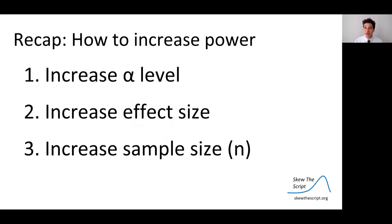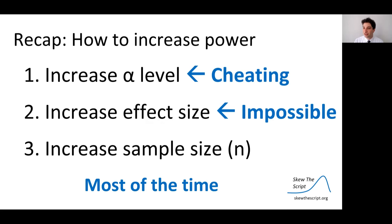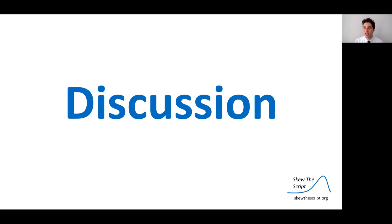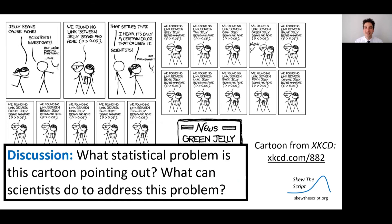Recap: how can you increase power? You could increase the alpha level — that's kind of cheating and increases your type 1 error rate. You can increase the effect size, but that's impossible to do in study design — it's on the drug design side. The best way is to increase the sample size: get more people, more individuals, more subjects, and you get a more precise estimate. Now let's move on to our discussion. There's a cartoon from XKCD — the link will be in the description. Read it carefully. The discussion question is: what statistical problem is this cartoon pointing out, and what can scientists do to address this problem?